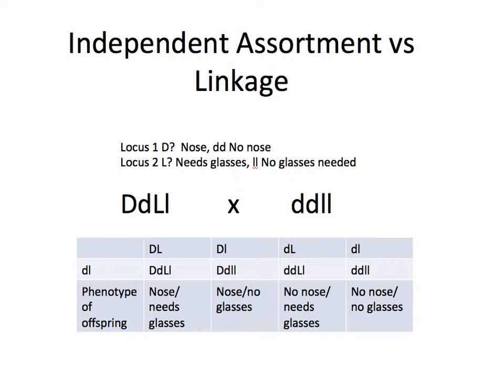In Mr. Potato Head, the traits related to the presence or absence of a nose are controlled by a particular locus, so that if you have a Mr. Potato Head who is either homozygous dominant (big D, big D) or heterozygous (big D, little d), that Mr. Potato Head is going to have a nose.